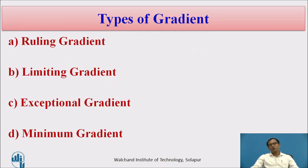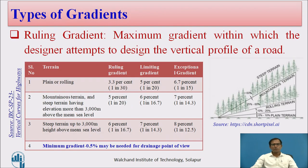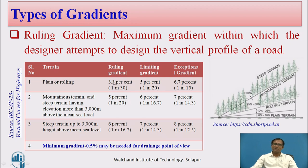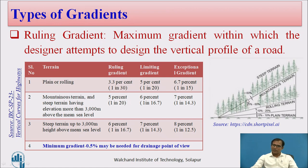We have four gradients: ruling, limiting, exceptional, and minimum. Ruling gradient is the maximum gradient given to the designer — in plane terrain, designers always want to design lesser than this value. As per the IRC code, for plane terrain it is 3.3%, which is 1 in 30. Terrain is classified as plane (0–10%), rolling (10–25%), mountainous, and steep (more than 60% cross slope). Different ruling gradients are given for different terrain conditions.